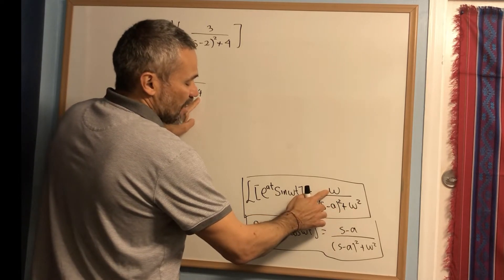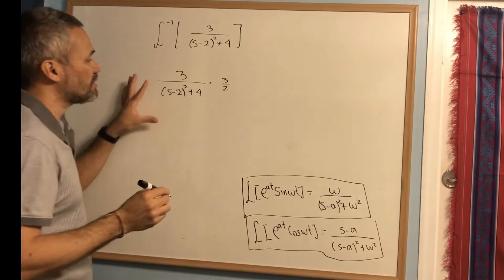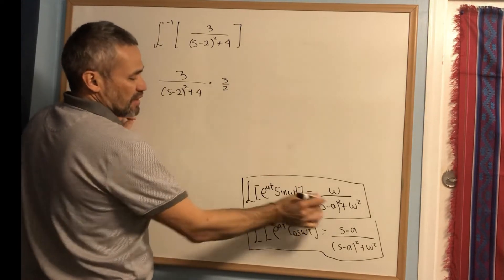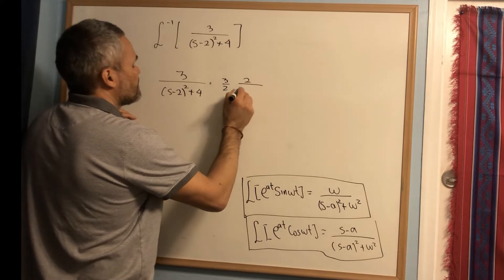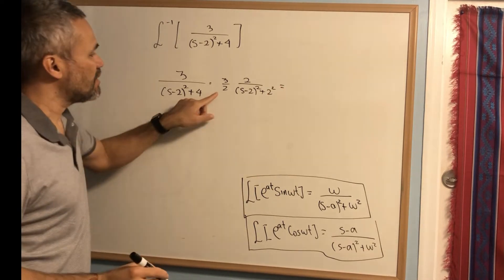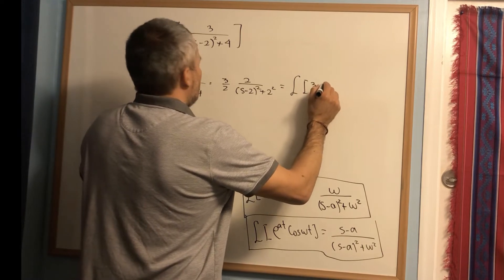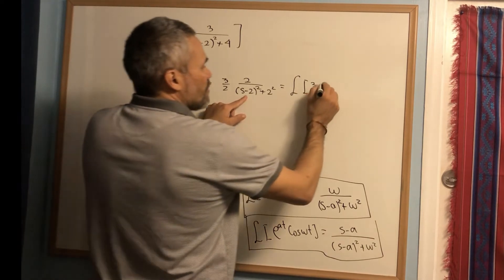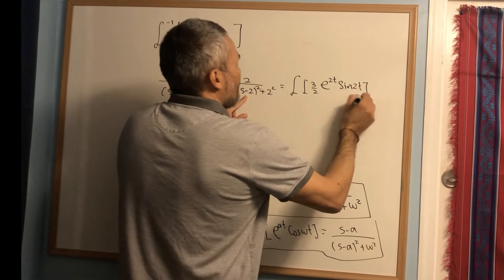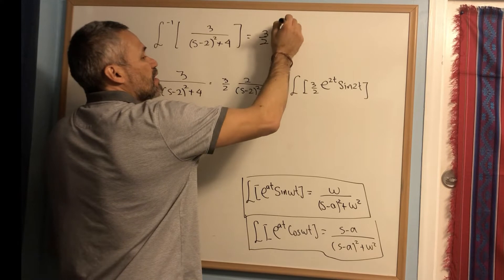We want a 2 on top but we have a 3, so we write this as (3/2) times 2 over (s-2)² + 2². Rewriting to match the formula, this is (3/2) times the Laplace transform of e^(2t) sin(2t). Therefore the answer is (3/2) e^(2t) sin(2t).